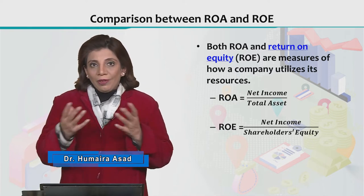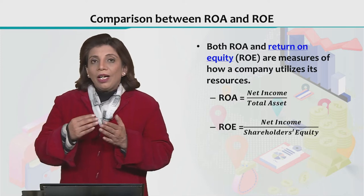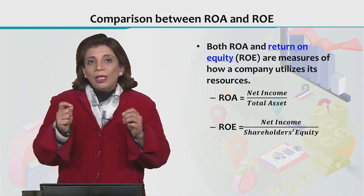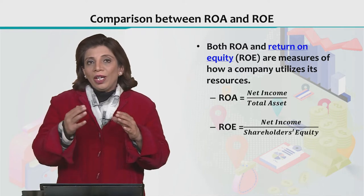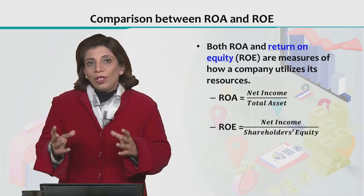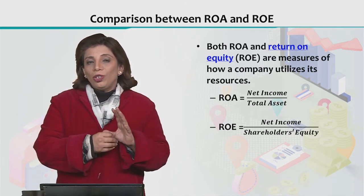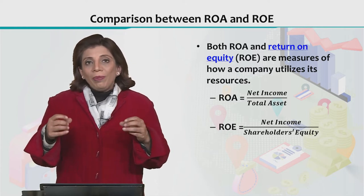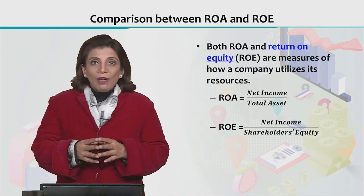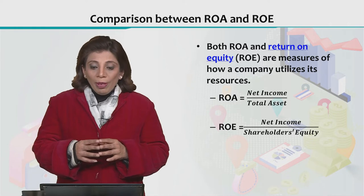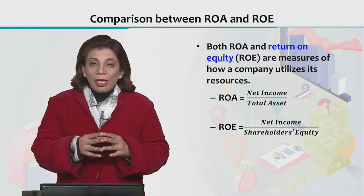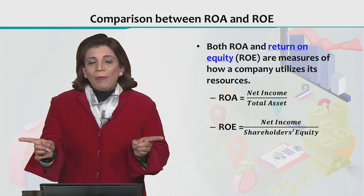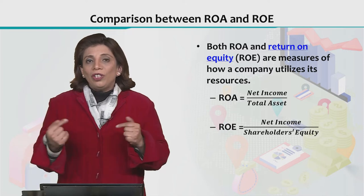As the terms say, one is return on assets and the other is return on equity. In ROE, you calculate how efficiently net income has been earned by considering the value of shareholder's equity. Whereas in ROA, you match earnings against total assets. That is the basic technical difference between the two, and it can be understood clearly if we look at the formulas. In the ROA formula, we have net income in the numerator and total assets in the denominator. In ROE, we look at net income in terms of shareholder's equity. So these are two different things.